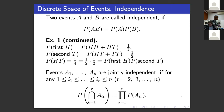Now we introduce the notion of independence. Two events are independent if the probability of their intersection equals the product of their probabilities. For example, in our coin-tossing example, the probability that the first toss was head is one-half, and similarly for the second toss being tail. Their intersection — event HT — has probability one-fourth, which equals one-half times one-half, confirming independence.